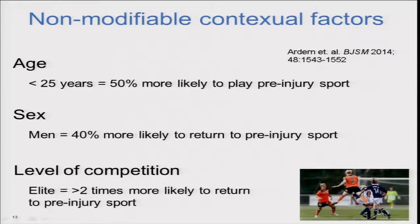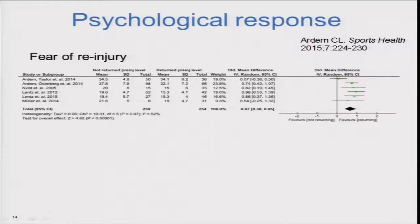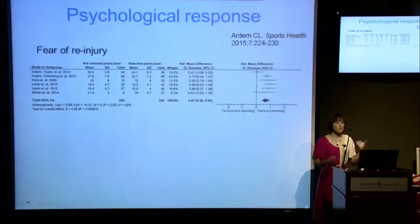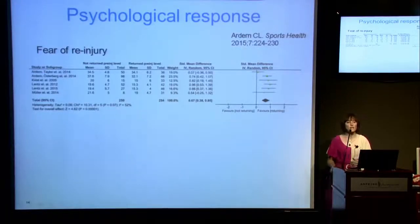These non-modifiable factors are important to keep in mind, but we can't actually change them. What I've been particularly interested in are factors we might be able to change — and the things most amenable to change are psychological responses. When we combine the data, there are two factors most researched: fear of re-injury and psychological readiness. We find a moderate to large effect for low fear of re-injury favouring return to pre-injury level sport — the less concerned you are about getting a new injury, the more likely you are to return.